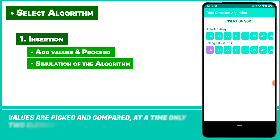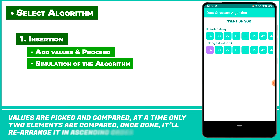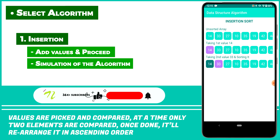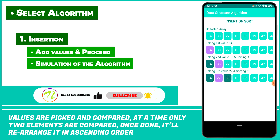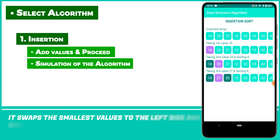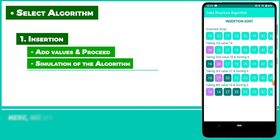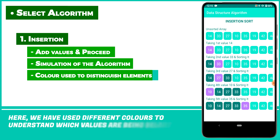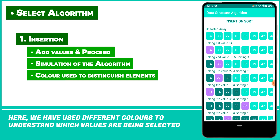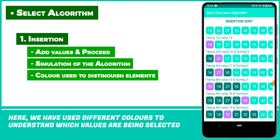Values are picked and compared. At a time, only two elements are compared. Once done, it will rearrange in ascending order. It swaps the smallest values to the left side and the highest value to the right. Here we have used different colors to understand which values are being selected.